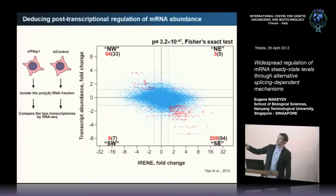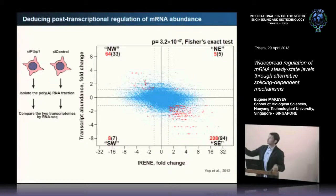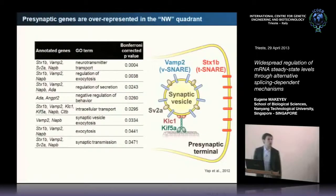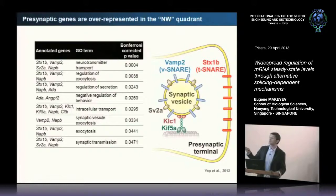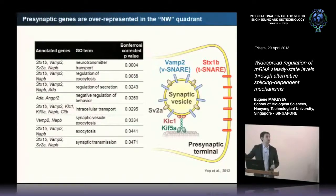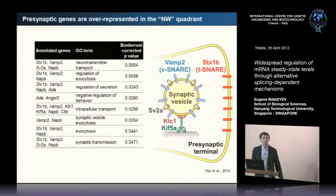We call these the Northwest genes, because they undergo up-regulation when you down-regulate PTB and they are also highly scoring in the post-transcriptional direction. When we quickly carried out gene ontology analysis of this group, we noticed a highly significant over-representation of genes contributing to the presynaptic compartment of a neuron. So these neuronal genes were undergoing up-regulation when PTB was knocked down—a nice sort of idea of a master regulator at the post-transcriptional level.